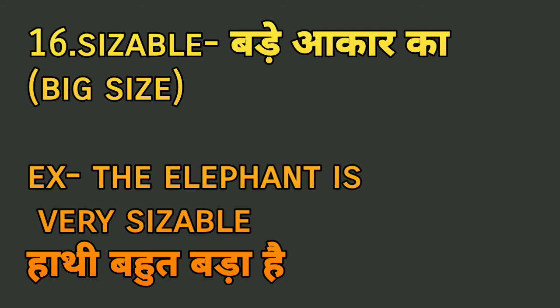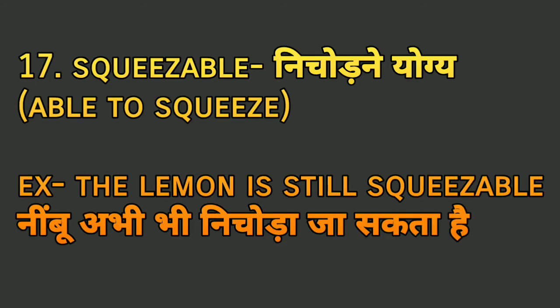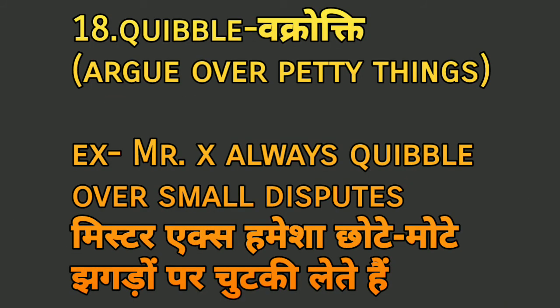'Sizable' means 'bade aakar ka' — big in size. For example: 'The elephant is very sizable' — haathi bahut bada hai. 'Squeezable' means 'nichode yogya' — able to be squeezed. For example: 'The lemon is still squeezable' — nimbu abhi bhi nichoda ja sakta hai. 'Quibble' means 'vakroti' — to argue over petty things. For example: 'Mr. X always quibbles over small disputes' — Mr. X hamisha chhote-mote jhagdon par chutkiyan leta hai.